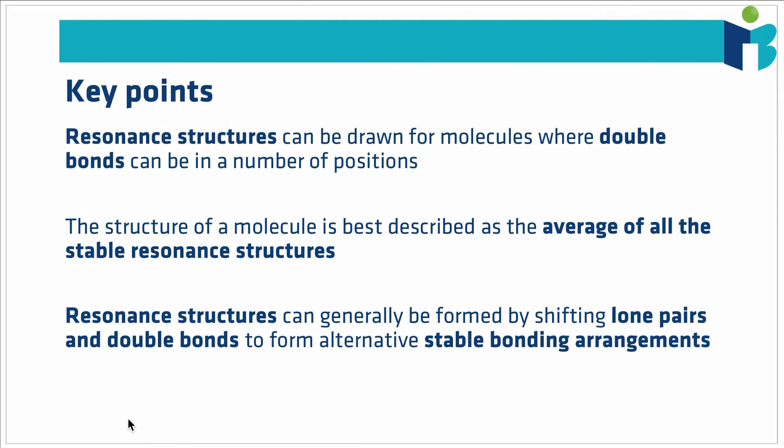Key points to take home from this video: resonance structures can be drawn for molecules where double bonds can be in a number of positions. The actual structure of the molecule is best described as an average of all of those stable resonance structures. In general, we form those resonance structures by shifting double bonds, and often that also involves shifting lone pairs to form alternative stable bonding arrangements where our double bonds are in different positions.